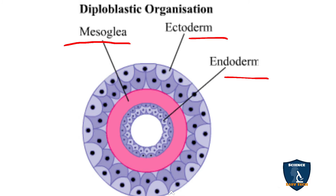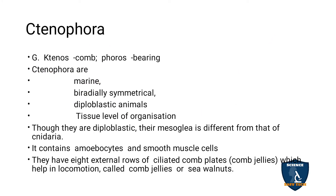Ctenophora is somewhat more advanced compared to Cnidarians, and it shows the tissue level of organization — tissues are formed in this phylum. Though diploblastic, their mesoglia is different from cnidarians because it consists of amoebocytes and smooth muscle cells. So amoebocytes and smooth muscle cells are present in Ctenophora.